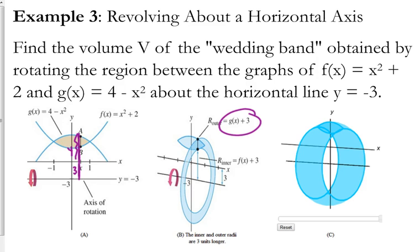Same thing for the inner radius. Here's my inner radius. This part is my y value, and then I have three extra units. So that's where they get f of x plus 3 from.